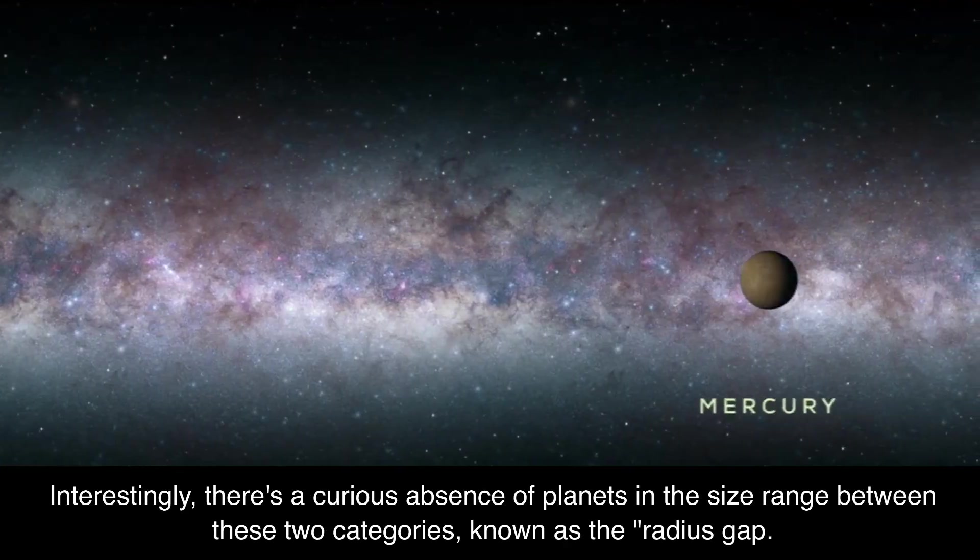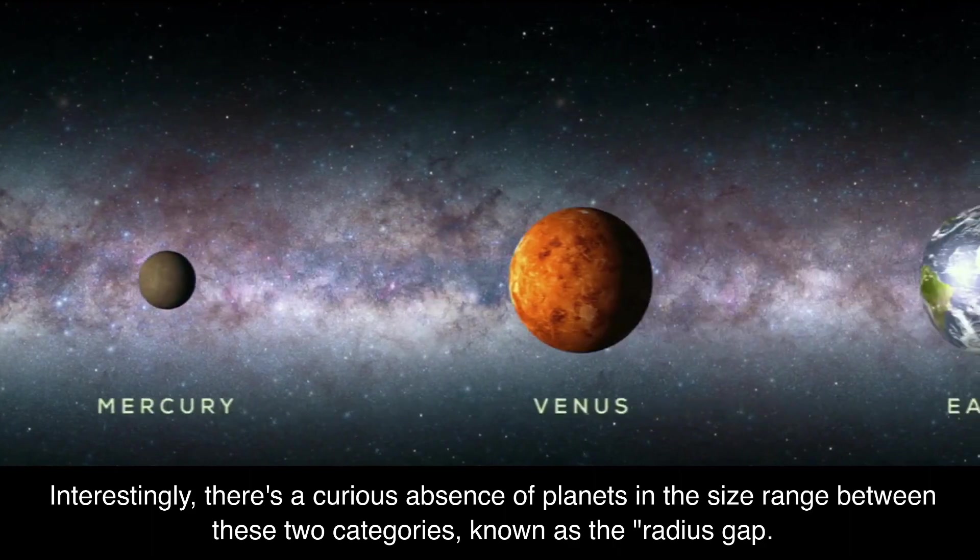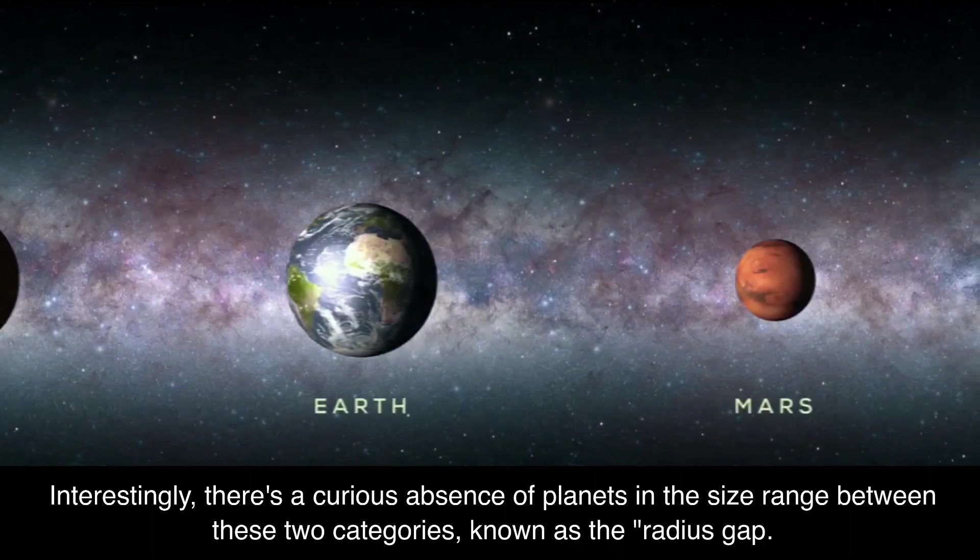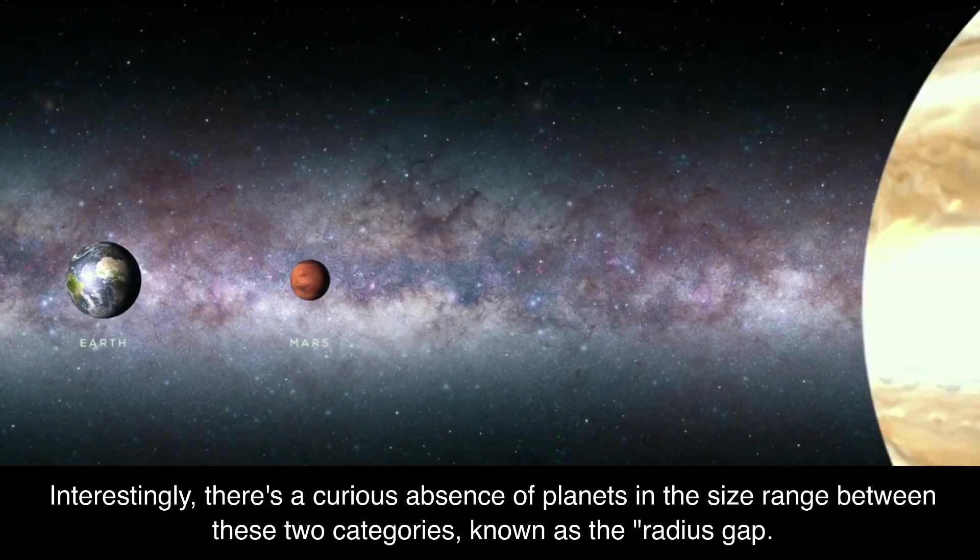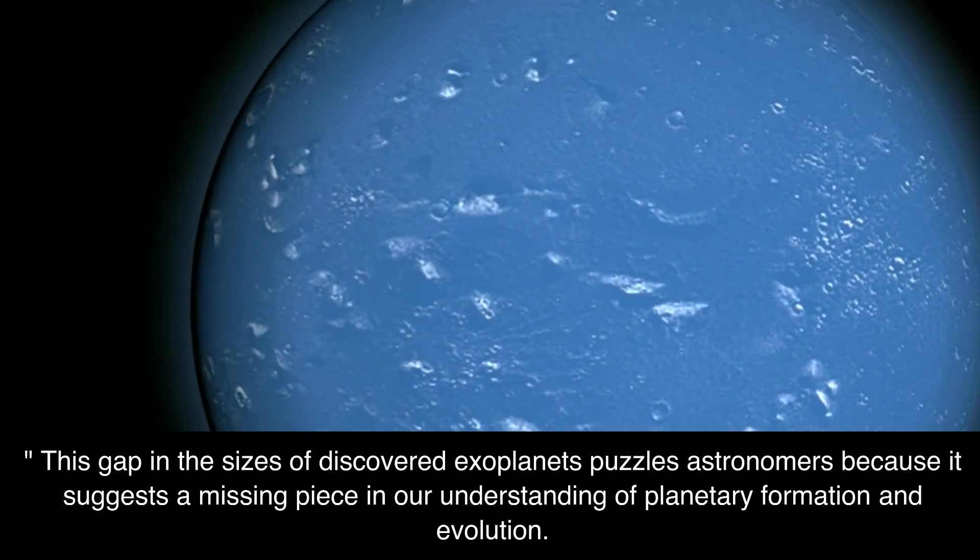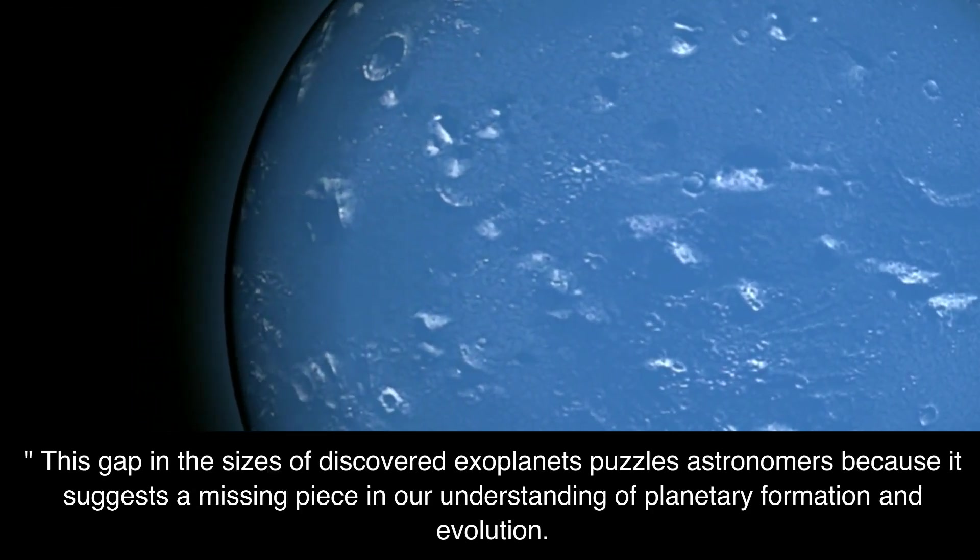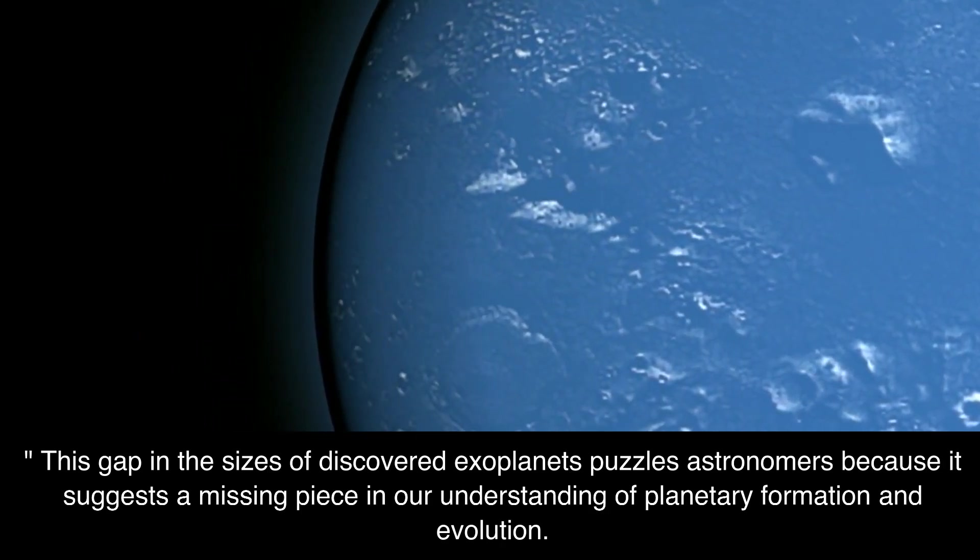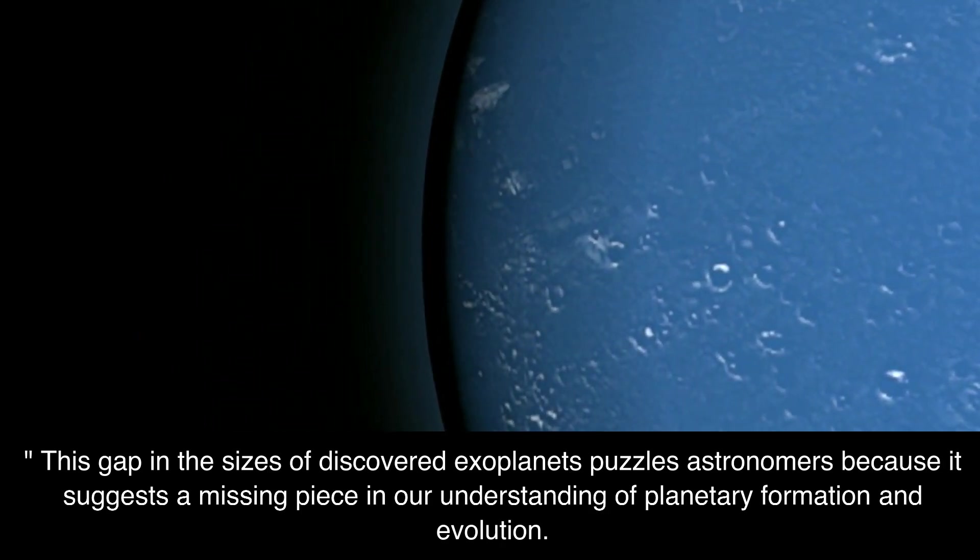Interestingly, there's a curious absence of planets in the size range between these two categories, known as the radius gap. This gap in the sizes of discovered exoplanets puzzles astronomers because it suggests a missing piece in our understanding of planetary formation and evolution.